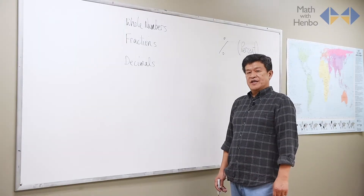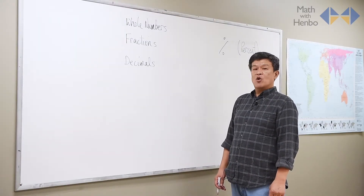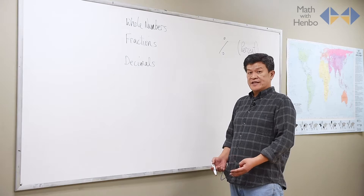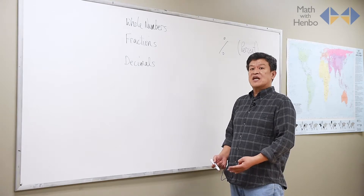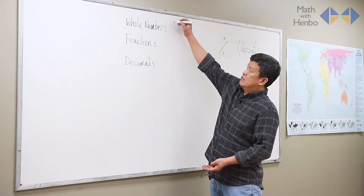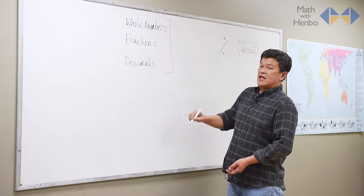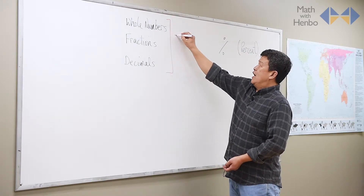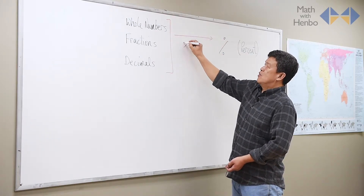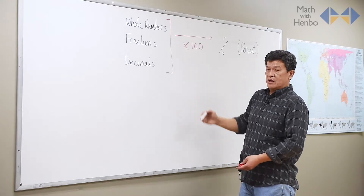When it comes to percent, what we're trying to do is convert any whole number, fractions, or decimals into something out of a hundred. So the best way to do it is take whatever you're given, and to convert to a percent, just multiply by 100.